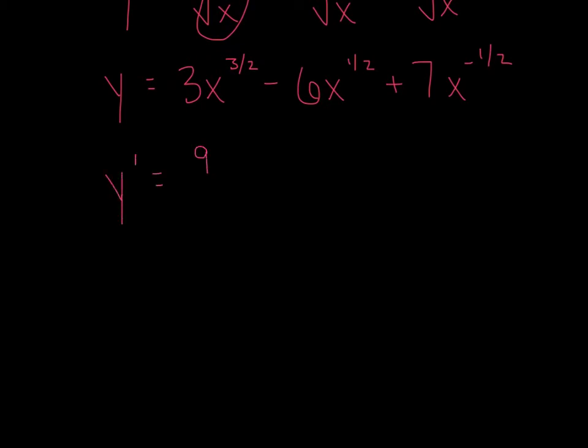At this moment, I'm ready to derive. I'm going to get 9 halves x to the 1 half minus 3x to the negative 1 half. And then we'll finish with negative 7 halves x to the what? Hopefully, you said negative 3 halves. And, of course, we could clean that up and rewrite those so that it's all cleaned up with no negative exponents, and I trust that we are good at that.